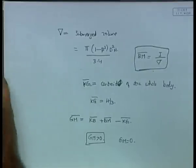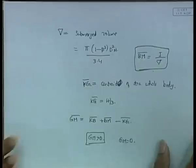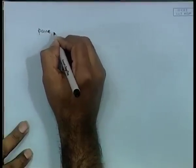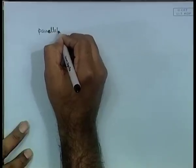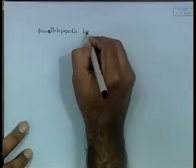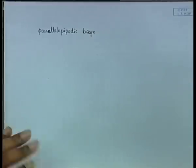The next one is a little more complicated. We call it a parallelopipedic barge - it is a rectangular box, all 90 degrees, with some thickness and some length. There is no slanting or angle - it is just a rectangular box.